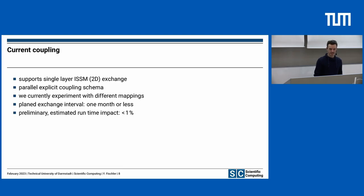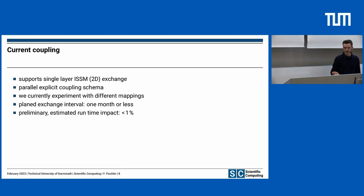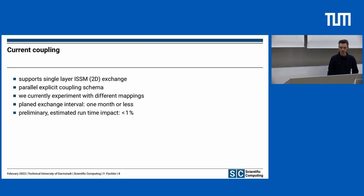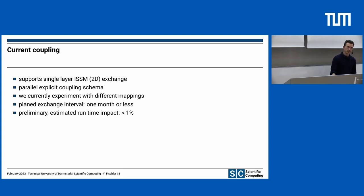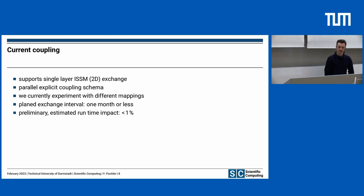The mapping is still an open question. The planned exchange intervals are approximately one month, but in summer months when there is more melt water, we might want smaller exchange intervals. Our preliminary experiments show that because of the high computational time of ISSM and CUAS-MPI to compute one month, the coupled simulation will have very low additional overhead.